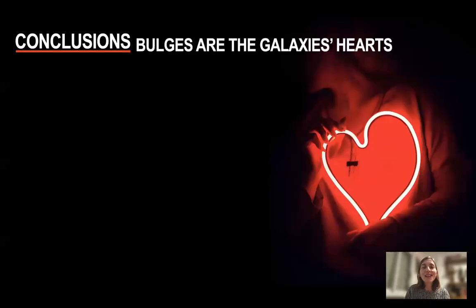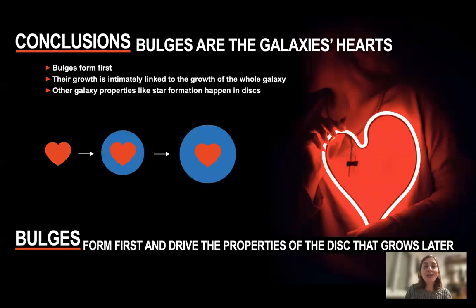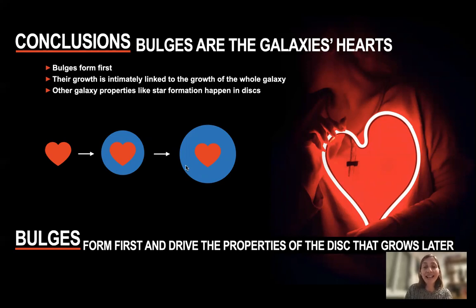So which is the conclusion we are picturing with all these pieces of evidence? We can say that bulges are galaxies' hearts — because at the end, what we see is that they form first, and then they decide how they grow a disk around them, and which properties the whole galaxy, both in bulges and disks, are going to have. So bulges drive the properties of the whole galaxy.